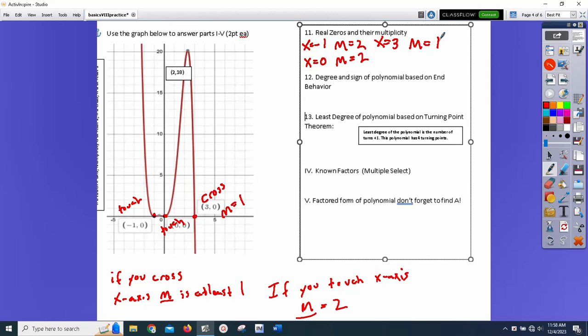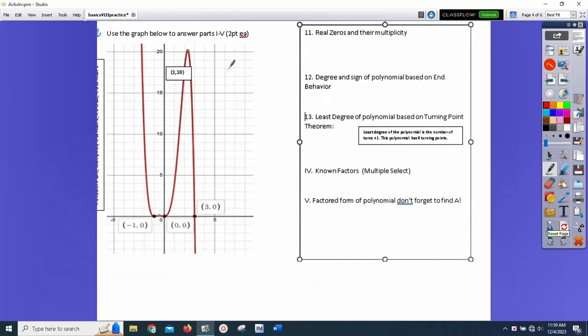All right. The degree and sign of the polynomial based on end behavior. This thing starts high, ends low. High to low. So, what that means is, it is a negative x to the odd. You know, I can go over these real quick. x to the even. Positive x to the even is high to high. Negative x to the even is going to be low and low. All right. So, negative x to the odd is going to be what I just did. Starts high, ends low. And then positive x to the odd is going to be starts low, ends high.